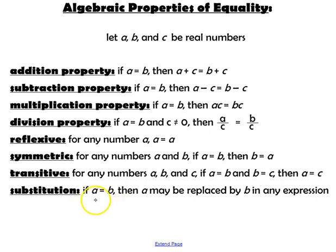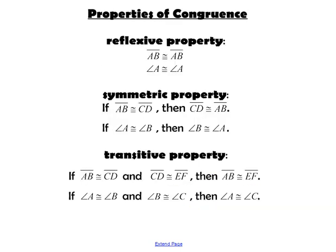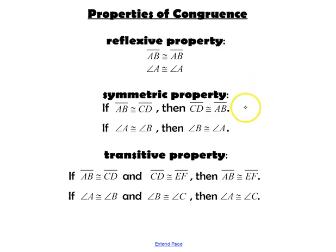Substitution is when you have A equal to B, then A can be replaced by B in any expression. Those properties of equality also carry over when we're talking about congruence. So we can use the reflexive, symmetric, and transitive properties with congruent segments and congruent angles.